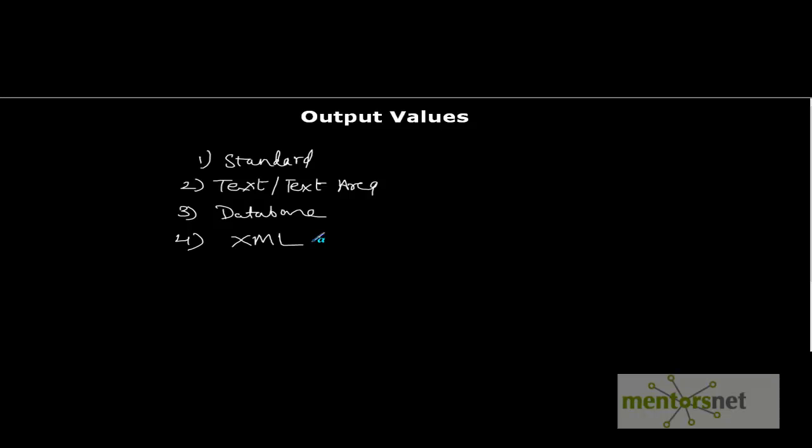Output values work in a similar manner as checkpoints. The only difference is that in checkpoints we are verifying the property value, whereas in output values we are capturing the value of a property into some location.